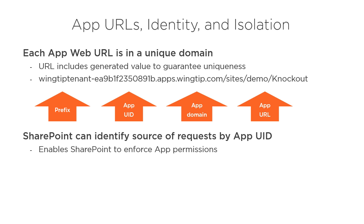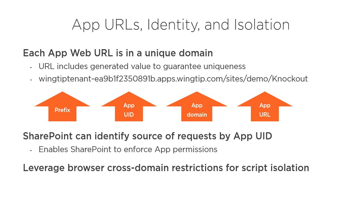With that said, let's discuss why each app web has a unique domain. The first reason is that a unique domain gives each app a unique identity, so SharePoint can identify which app is making a request and enforce app permissions — we'll talk more about app identity and permissions in the next clip. The second reason is app isolation: because each app has its own domain, each app is bound by the cross-domain restrictions enforced by modern browsers, which helps protect data stored in the app.